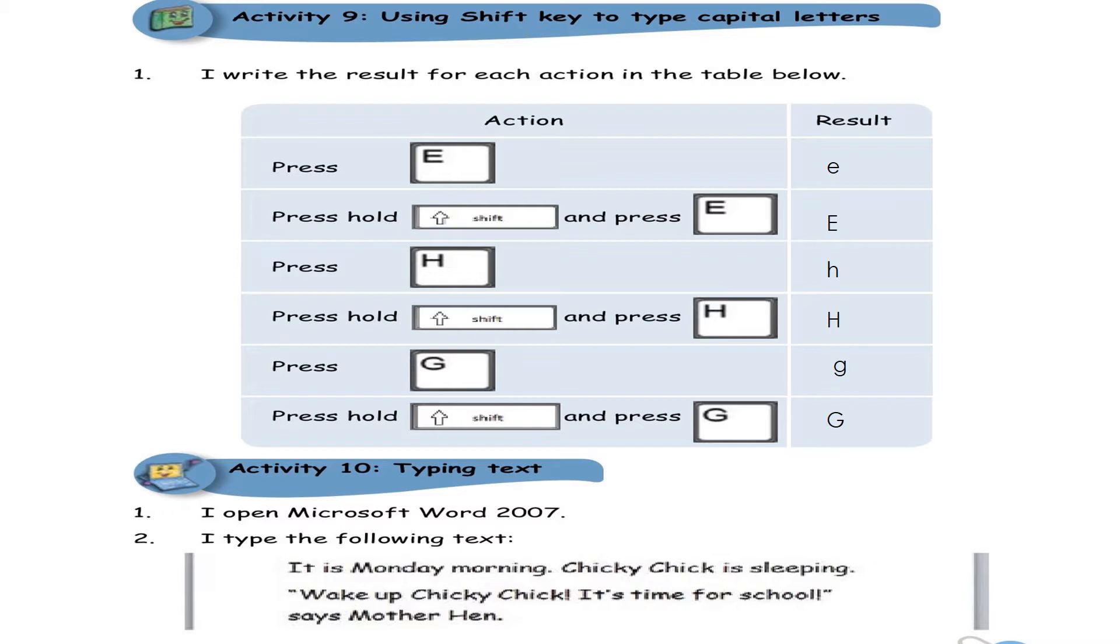Next we have, if you would have pressed only H, then you would have a small letter H. However, if you press and hold shift and then you press H, you will have a capital letter H. And lastly, if you press G, just press the button G, you will have a small letter G. But if you press and hold the shift key, then you press the G key, you are going to get a G capital.